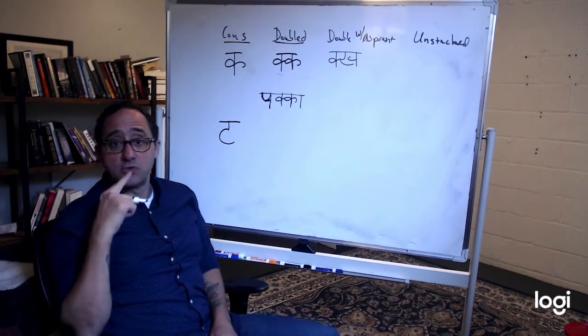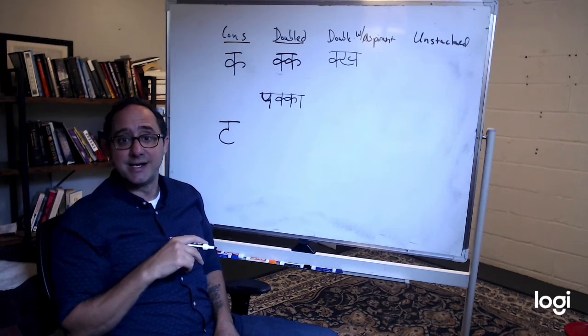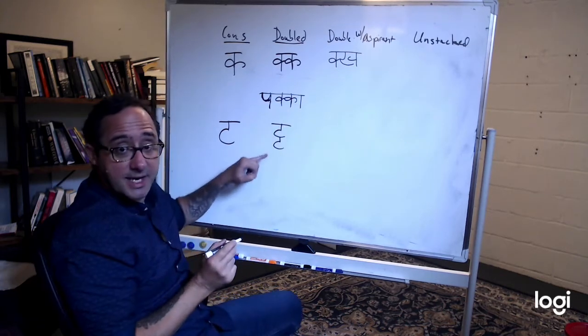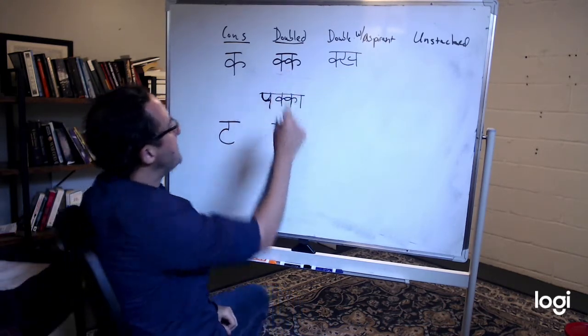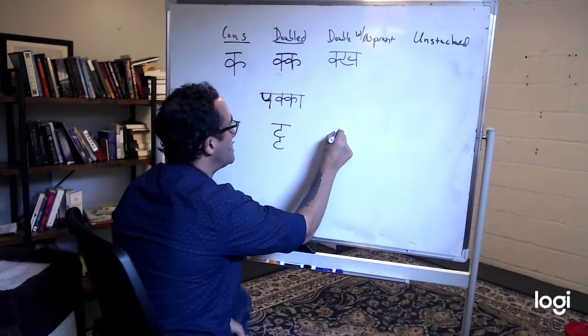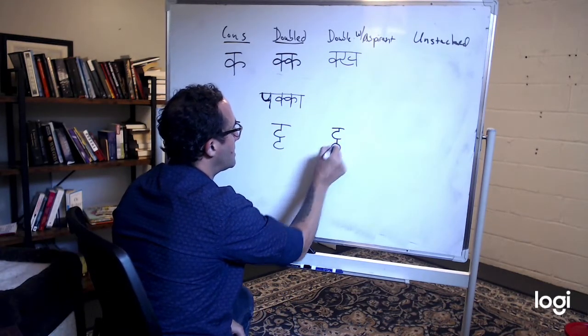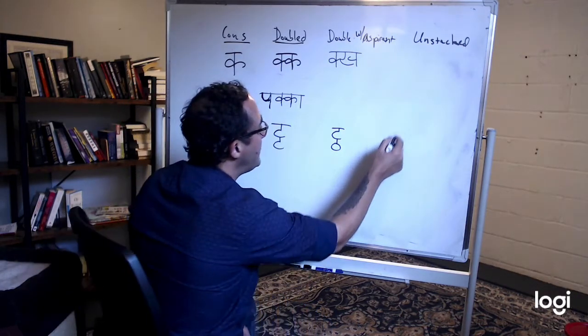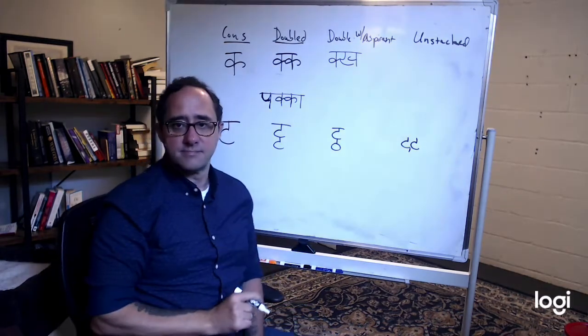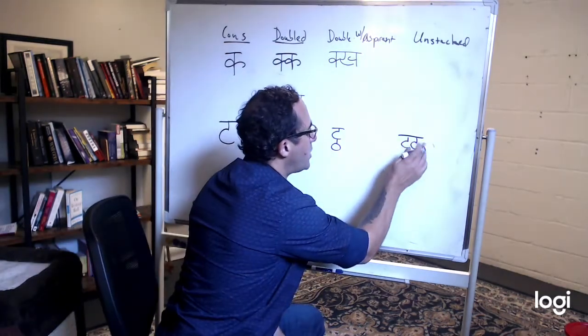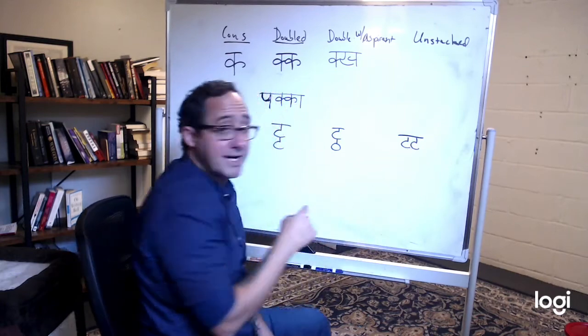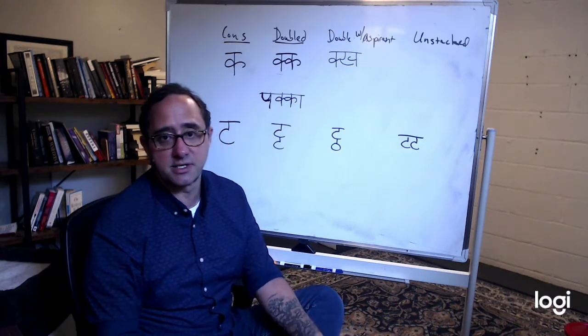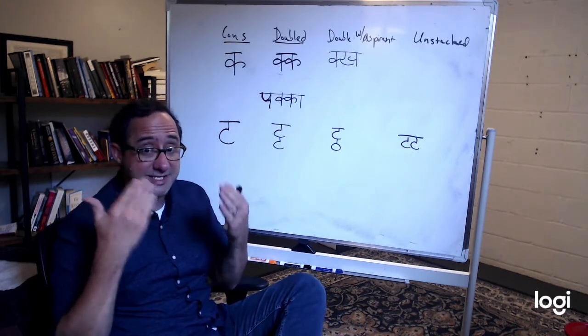This is the retroflex T. Doubled. See how it's stacked on top of each other? It's vertical. Now I'm going to double it with the aspirated version. Tuh, duh, tuh. And then I'm going to try it unstacked. It would be two together. So, you'd want to see it like that because sometimes it will be unstacked. That's how I suggest going about it in order to start to see it.